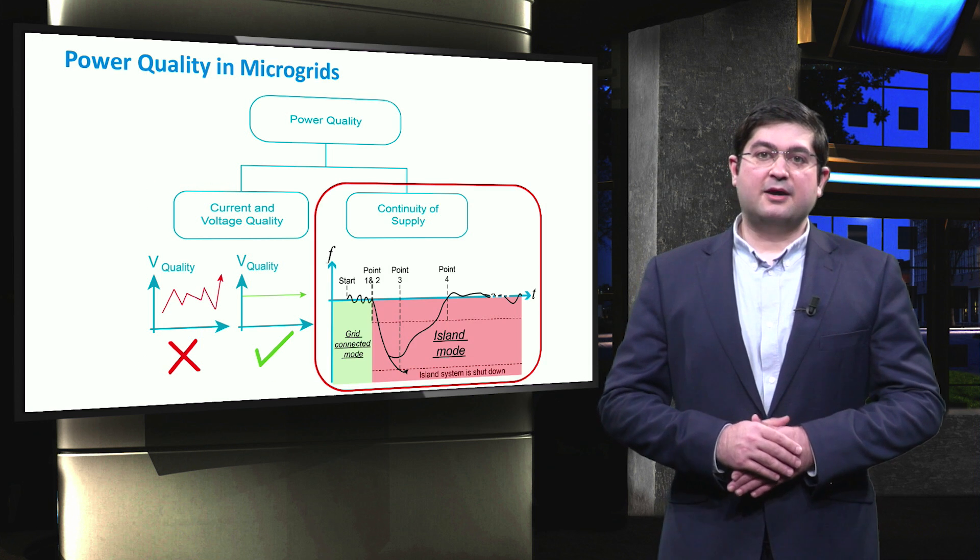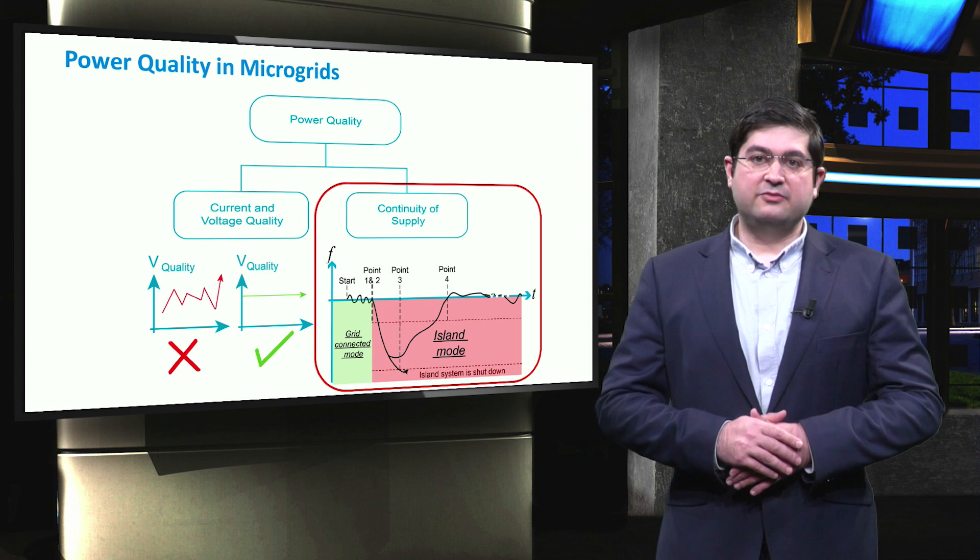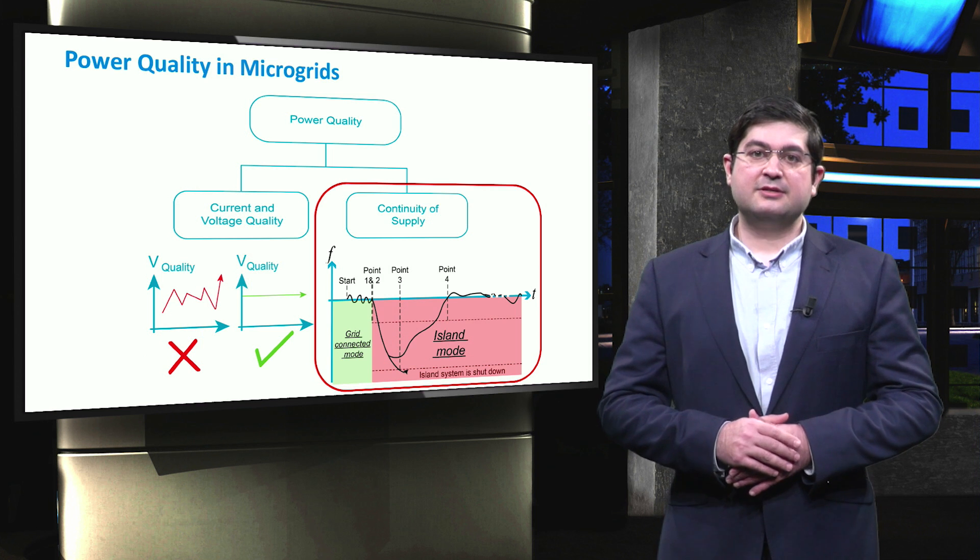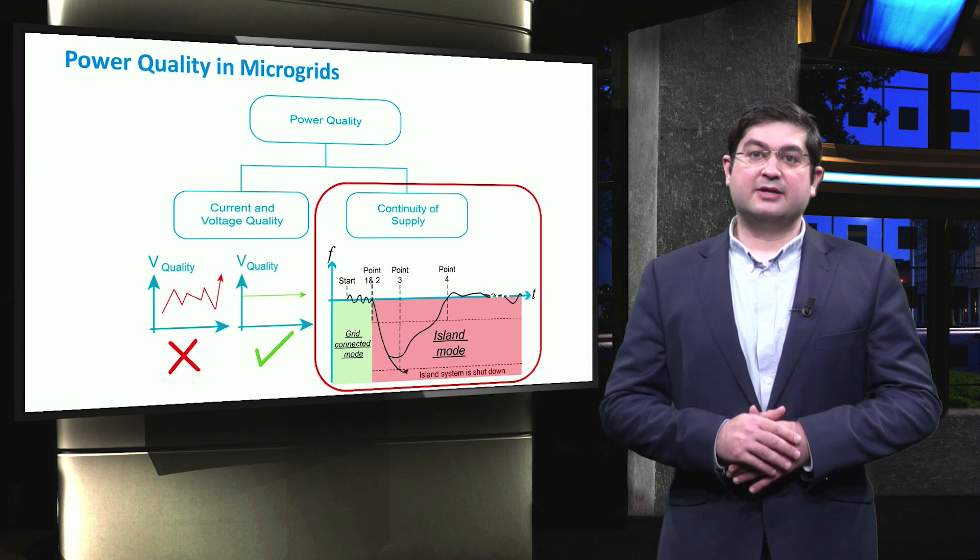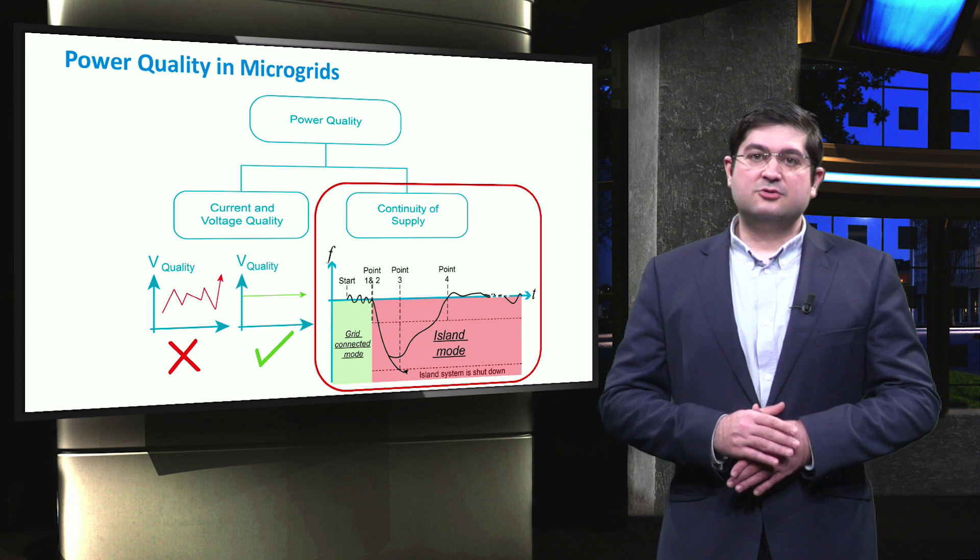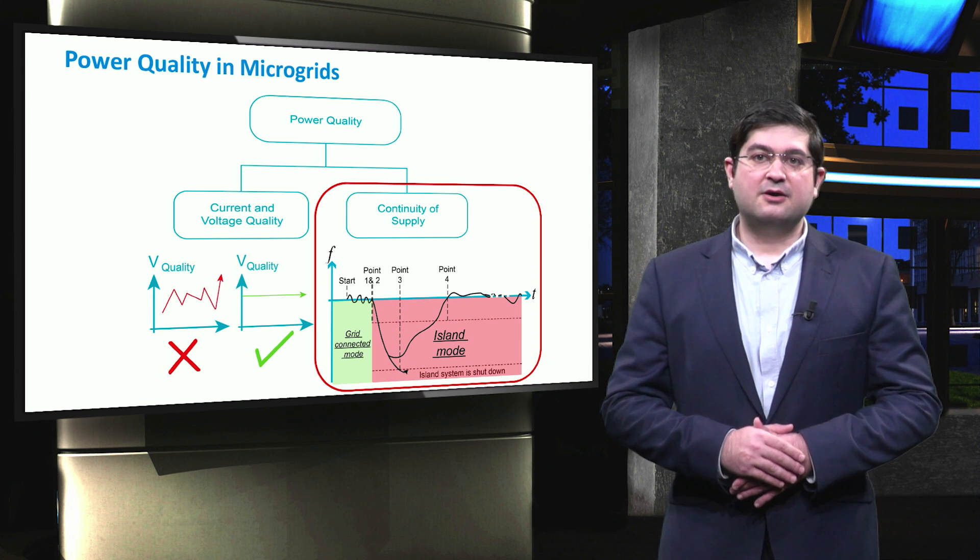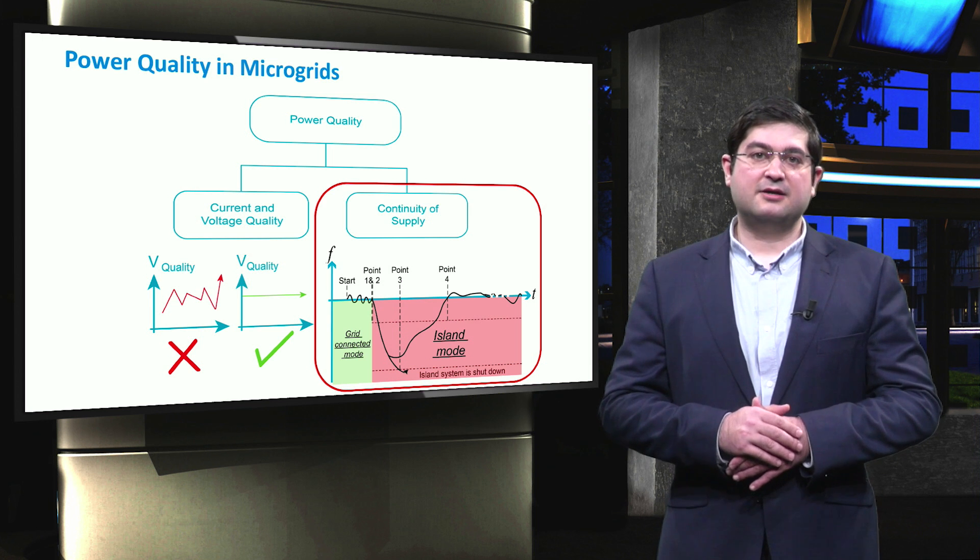Continuity of supply is highly related to the investments, operation and maintenance on the distribution side. According to EN 50160 standard, interruptions more than three minutes are considered as long-term interruptions.